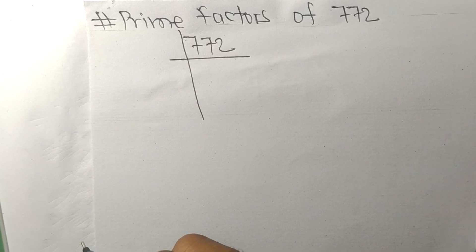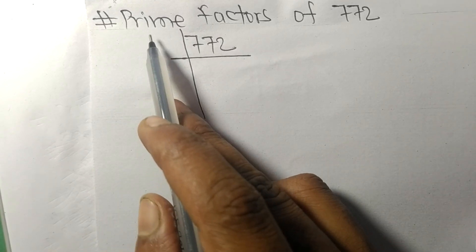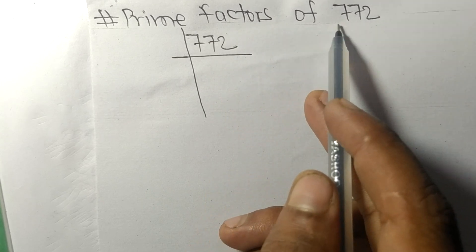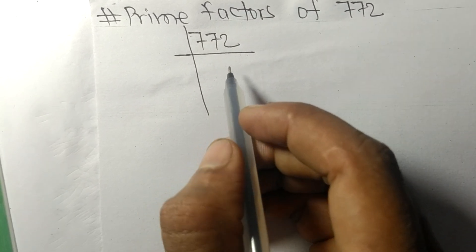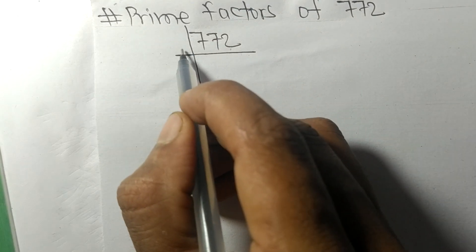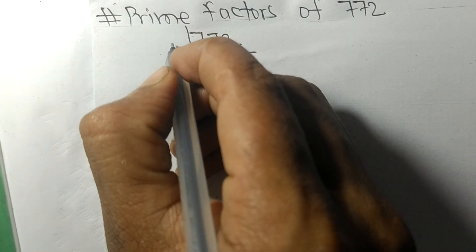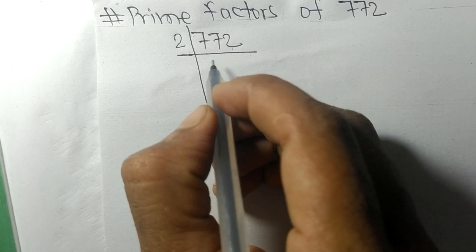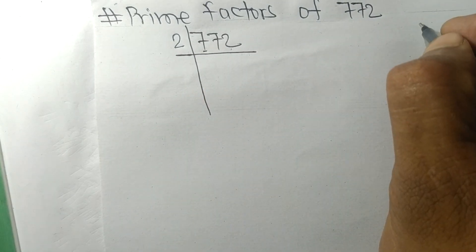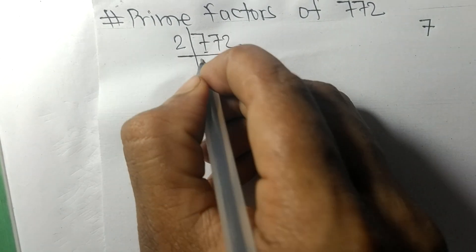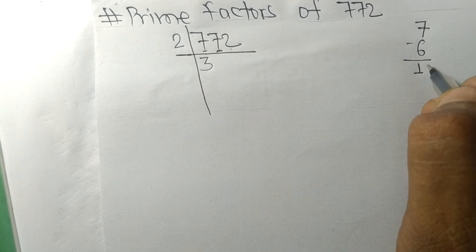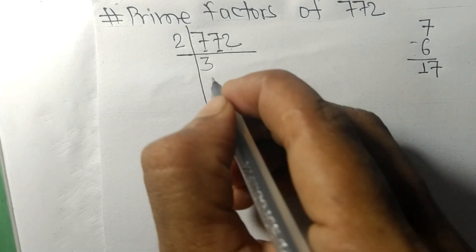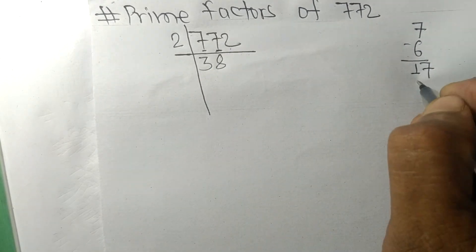Today in this video we shall learn to find the prime factors of 772. It contains an even number, so this whole number is divisible by two. First we have seven, so two times three equals six. On subtracting we get one, and this seven becomes seventeen. Two times eight equals sixteen, on subtracting we got one.